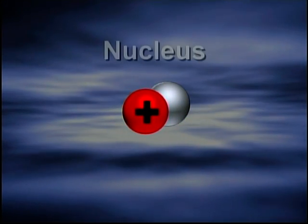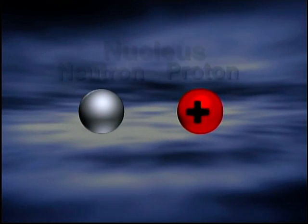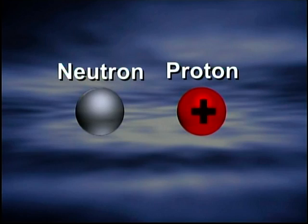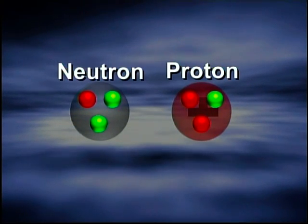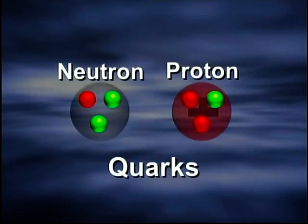The neutrons and protons in an atom are about the same size and weight and they form the nucleus. Modern physics has shown us that neutrons and protons are not solid particles but rather made up of three sub-particles called quarks.